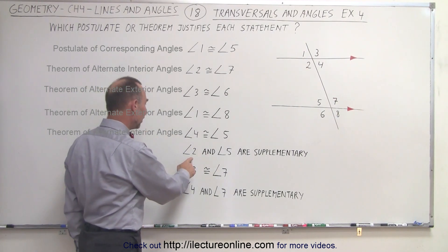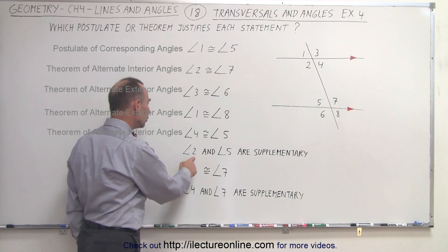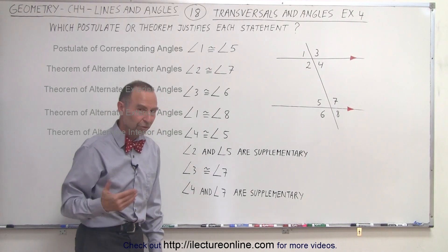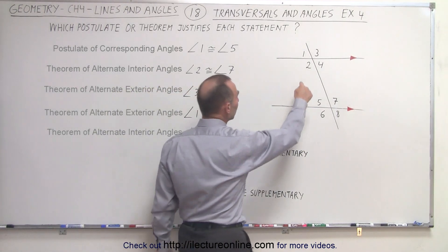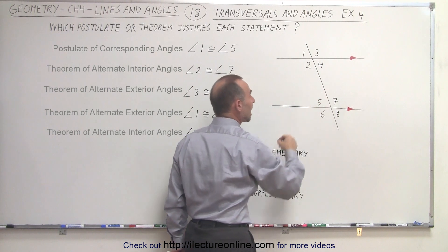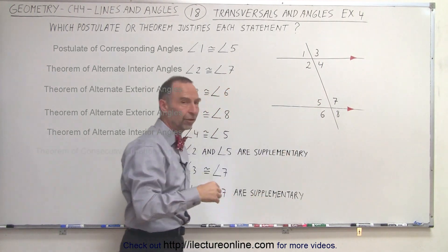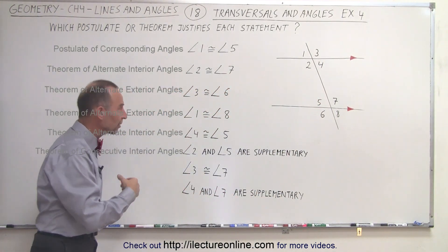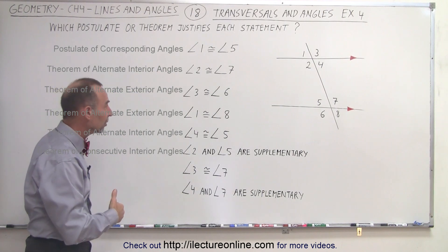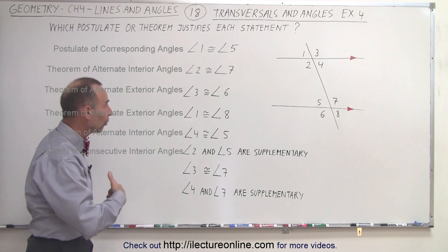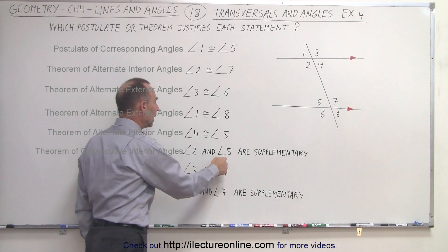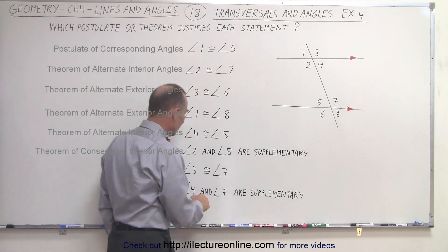Now here we have that angle two and angle five are supplementary. Let's look at angle two and angle five — notice they are consecutive interior angles. The theorem of consecutive interior angles tells us that their measures add up to 180 degrees, so by that theorem we can claim that angle two and angle five are supplementary.